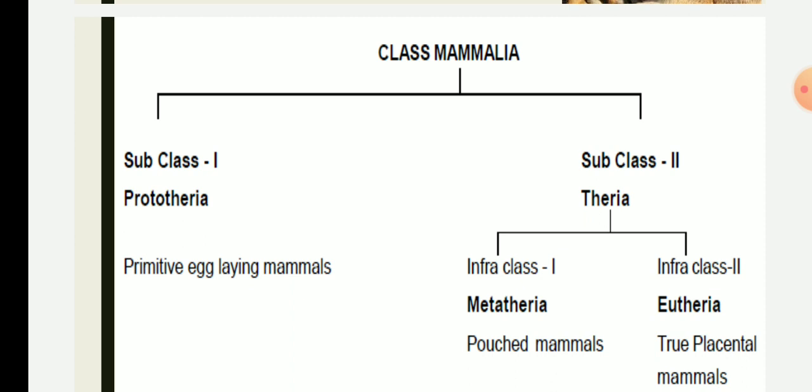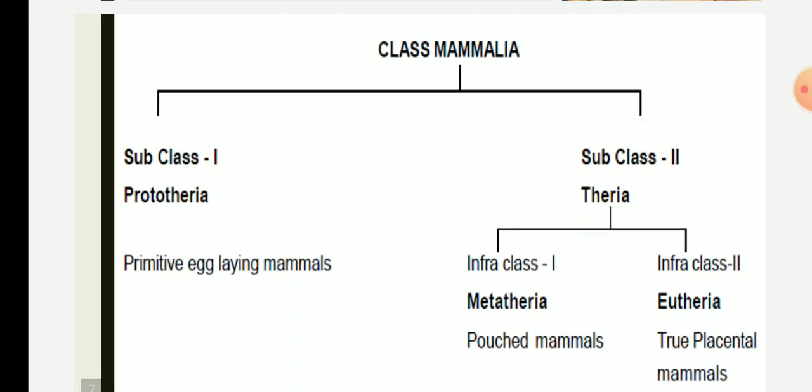The class contains 18 living orders of mammals, which are first divided into two subclasses: subclass one, Prototheria, and subclass two, Theria.